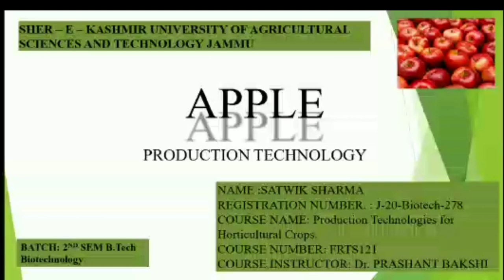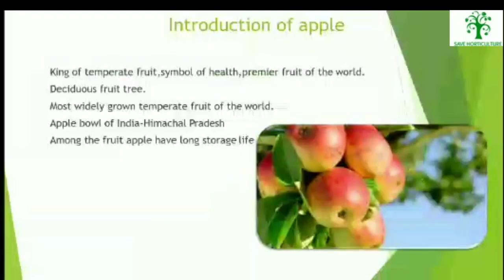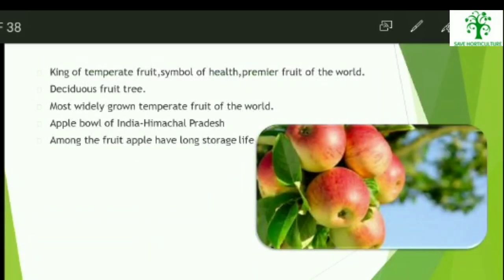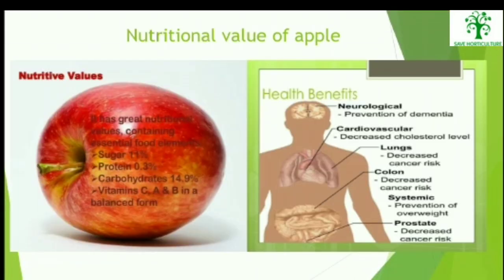Without any further ado, let's get started. Apple is famously referred to as the king of temperate fruits and it is one of the most premier fruits of the world. It is the most widely grown temperate fruit in the world. Himachal Pradesh in India is famously referred to as the Apple Bowl. Apple also possesses great nutritional values and it contains essential food elements including sugar, protein, carbohydrates, and vitamins in a balanced form.